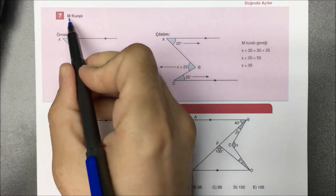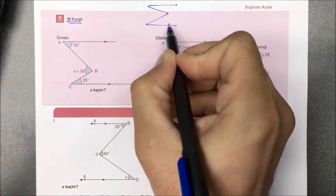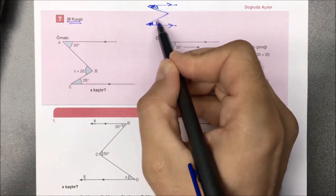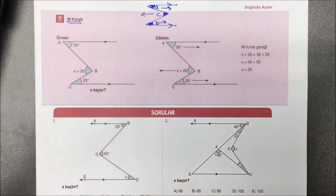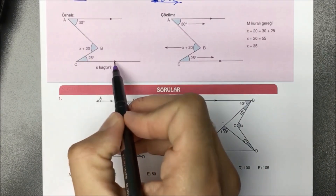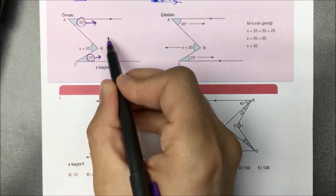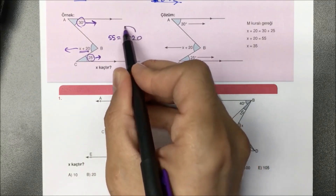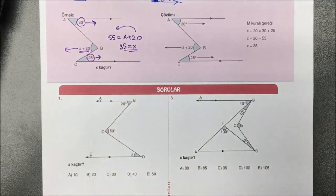Yedinci türümüzdeyiz: M kuralı. Doğruda açılar konusunun en sevilen kuralıdır. Paralel iki doğru arasında M'ye benzer harfi gördüğümüzde, kulakçıklar arasında kalan açıların toplamı A ile B olsun; sağ tarafa bakan A ile B'nin toplamı sol tarafa bakan C'ye eşit olacak. Örnek sorumuza bakacak olursak M harfi söz konusu. Sağ tarafa bakan iki açıyı toplayacağız: 30 ile 25 topladık, 55. Eşittir sol tarafa bakan açı: X artı 20. 20'yi karşı atarsak 55'den 20'yi çıkartırsak X eşittir 35 bulunmuş olur.